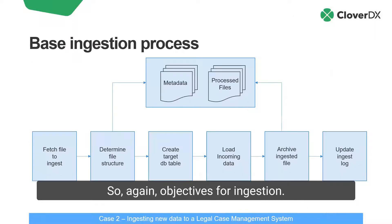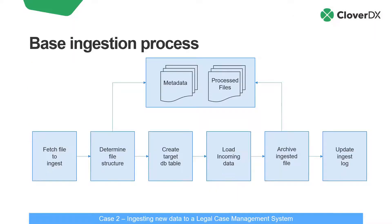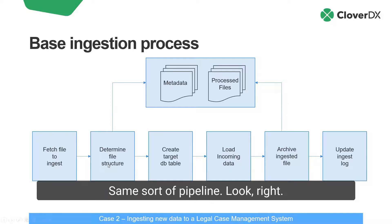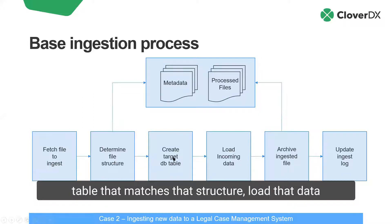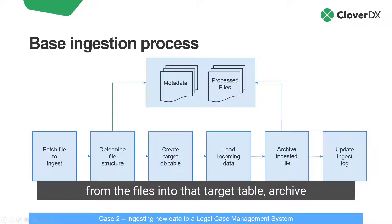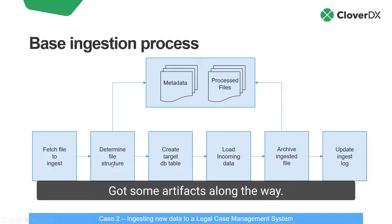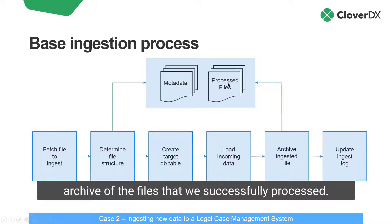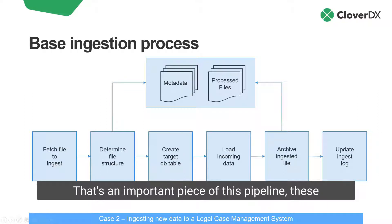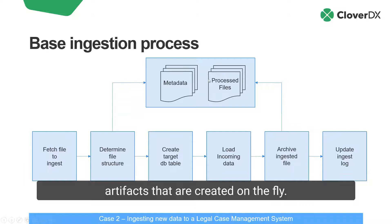So again, objectives for ingestion. Here's a flowchart — same sort of pipeline look: fetch the files that need to be ingested, determine what their structure is, create a target table that matches that structure, load that data from the files into that target table, archive the incoming file, and then create a log. We've got some artifacts along the way. When we guess at the file structure, we call that metadata — we'll keep a file that's our guess at the file structure, and then we'll keep an archive of the files that we've successfully processed. That's an important piece of this pipeline, these artifacts created on the fly.